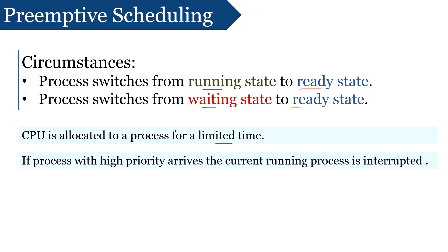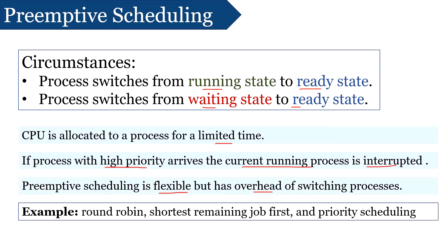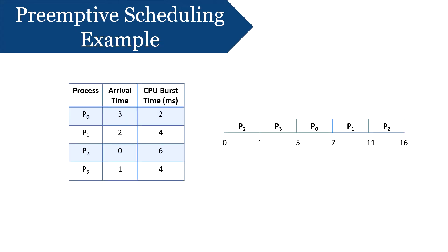In primitive scheduling, if a process with high priority arrives in the ready queue, the operating system preempts or interrupts the execution of the current running process, places it back in the ready queue, and provides the CPU to the high-priority process. This reduces the average waiting time of processes and makes scheduling flexible. However, primitive scheduling has an overhead of frequently switching processes between the running and ready states. Examples of primitive scheduling are round robin, shortest remaining job first, and priority scheduling.